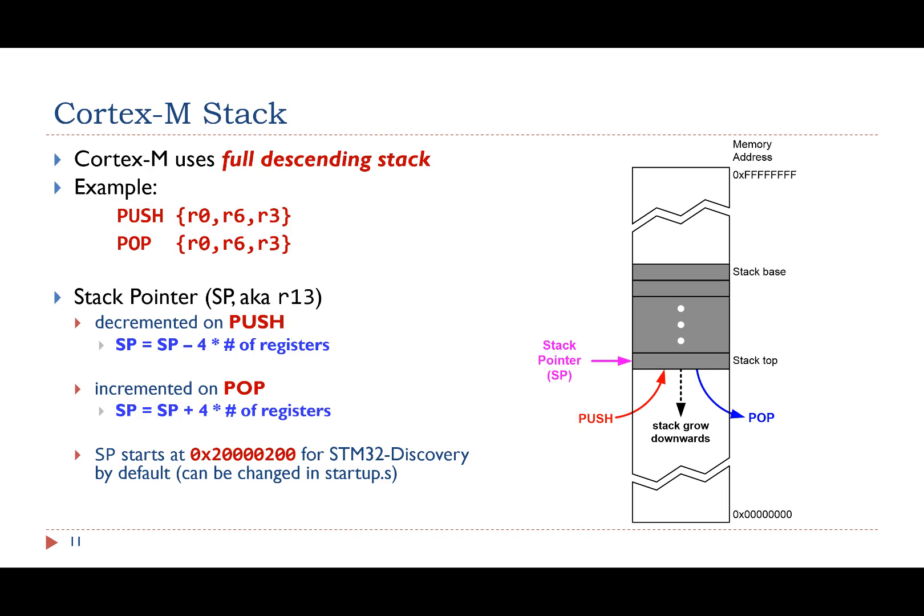In the previous examples, we talked about using the stack to preserve registers. Here is a quick review about stack. ARM Cortex-M uses full descending stack. The stack grows towards the lower memory address. The stack pointer decreases as the value of a register is pushed onto the stack. On the other hand, the stack pointer increases as a value is popped off the stack.